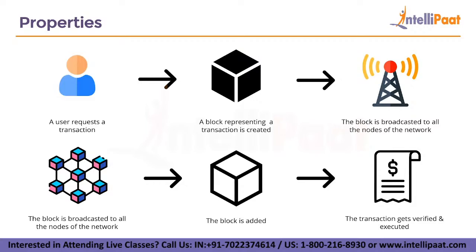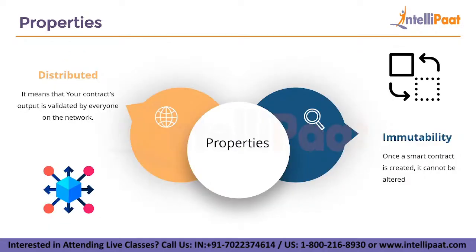To execute a smart contract on the Ethereum network, you will typically be required to pay a cost known as GAS, so named because these fees keep the blockchain running. Smart contracts are generally unchangeable once they are deployed on the blockchain, even by their developers, with certain exceptions. This ensures that they cannot be censored or shut down.